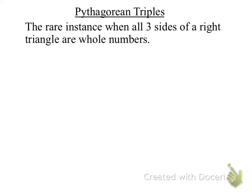Another part of Pythagorean Theorem is something called Pythagorean Triples. This is where all three sides of a right triangle are whole numbers. So when I have 3, 4, 5, this is called a Pythagorean Triple.